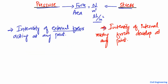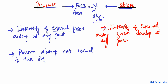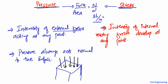The second difference: pressure always acts normal or perpendicular to the surface. If I draw any surface, the pressure load is always acting perpendicular to it, which means it makes a 90-degree angle to the surface. This is the definition of pressure — it is always perpendicular.